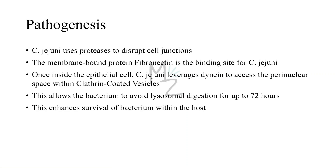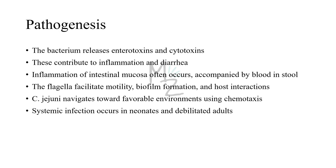Pathogenesis. Campylobacter jejuni uses proteases — these are enzymes — to disrupt cell junctions. The membrane-bound protein fibronectin is the critical binding site for Campylobacter jejuni. Once inside the epithelial cells, Campylobacter jejuni leverages dynein, a protein, to access the perinuclear space within clathrin-coated vesicles. This allows the bacterium to avoid lysosomal digestion for up to 72 hours, enhancing its survival and persistence within the host. The bacterium releases enterotoxins and cytotoxins, contributing to inflammation and diarrhea. Inflammation of intestinal mucosa often occurs, accompanied by blood in stool. Flagella facilitate motility, biofilm formation, and host interactions. Campylobacter jejuni navigates toward favorable environments using chemotaxis. Systemic infection occurs in neonates and debilitated adults.